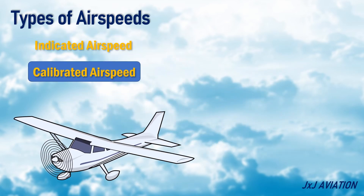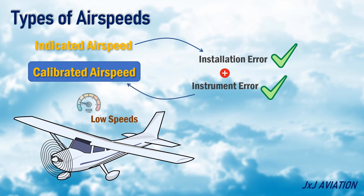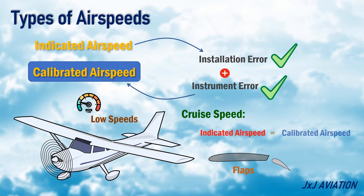Calibrated airspeed: indicated airspeed corrected for installation error and instrument error is calibrated airspeed. The airspeed error is greatest at low airspeeds. The errors are also significantly high when the flaps are extended. At cruise speeds or higher airspeed, the calibrated airspeed and the indicated airspeed are approximately the same.